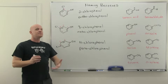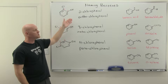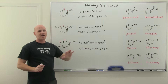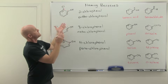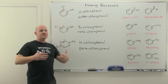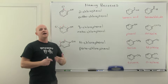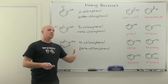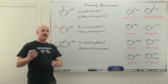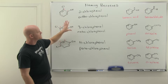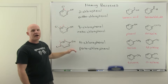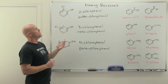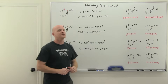For di-substituted benzenes, you'll actually much more commonly see ortho, meta, and para used instead of numbers. These terms are also important when we talk about reactions in the next chapter, because when a benzene undergoes a reaction, certain positions on the ring can be activated or deactivated. We usually identify those positions using the ortho, meta, and para relationships rather than the two, three, or four positions. It's really important you understand what ortho, meta, and para mean and how they apply to nomenclature.